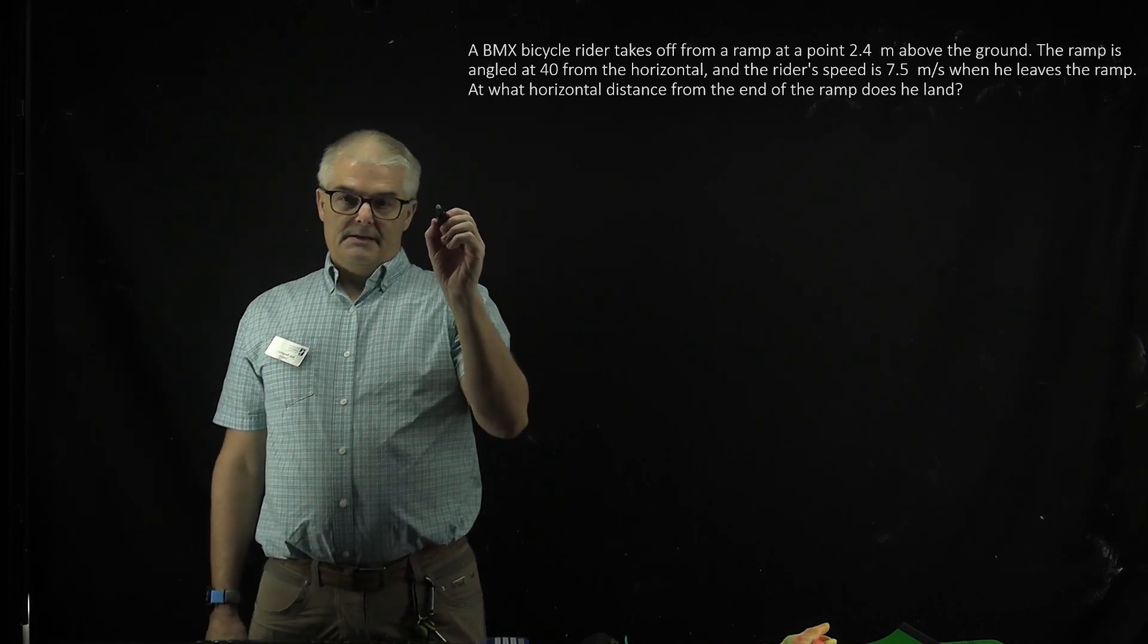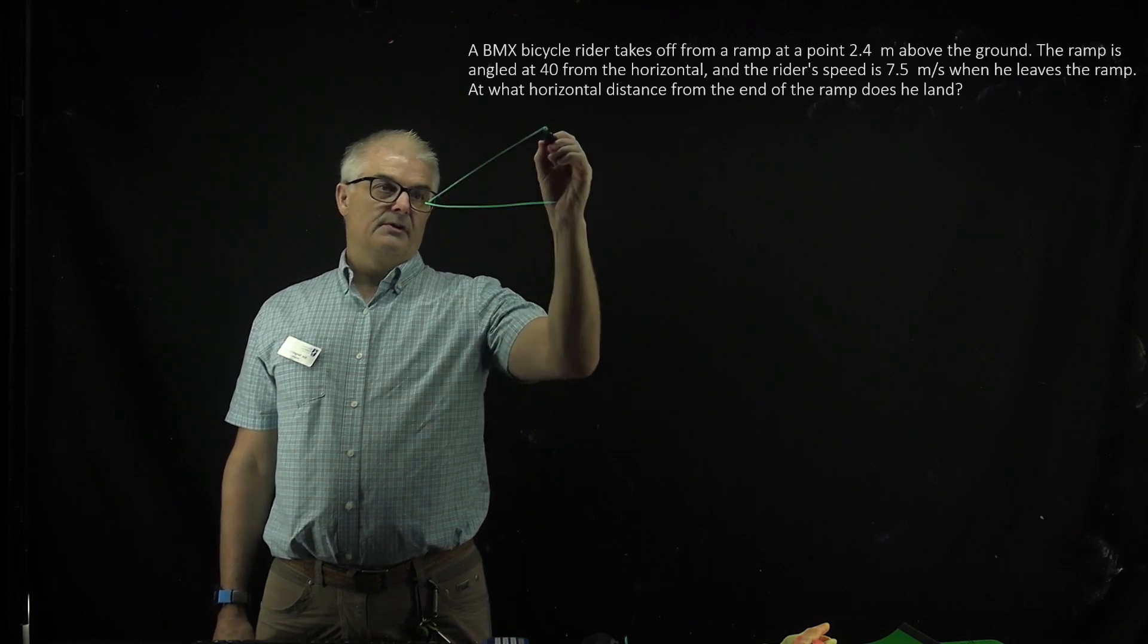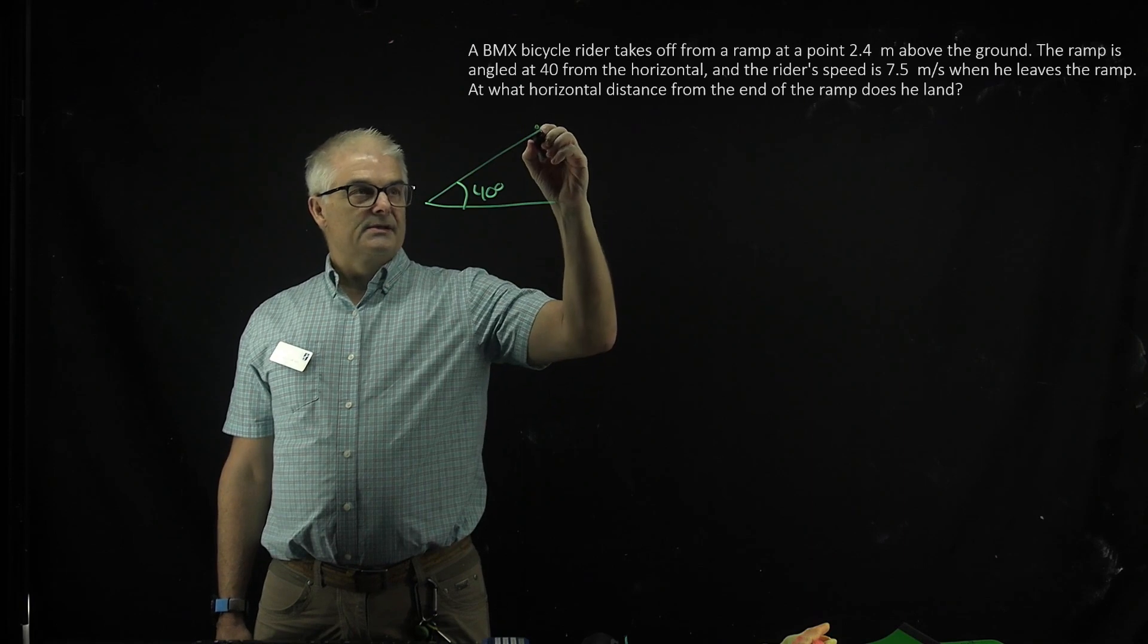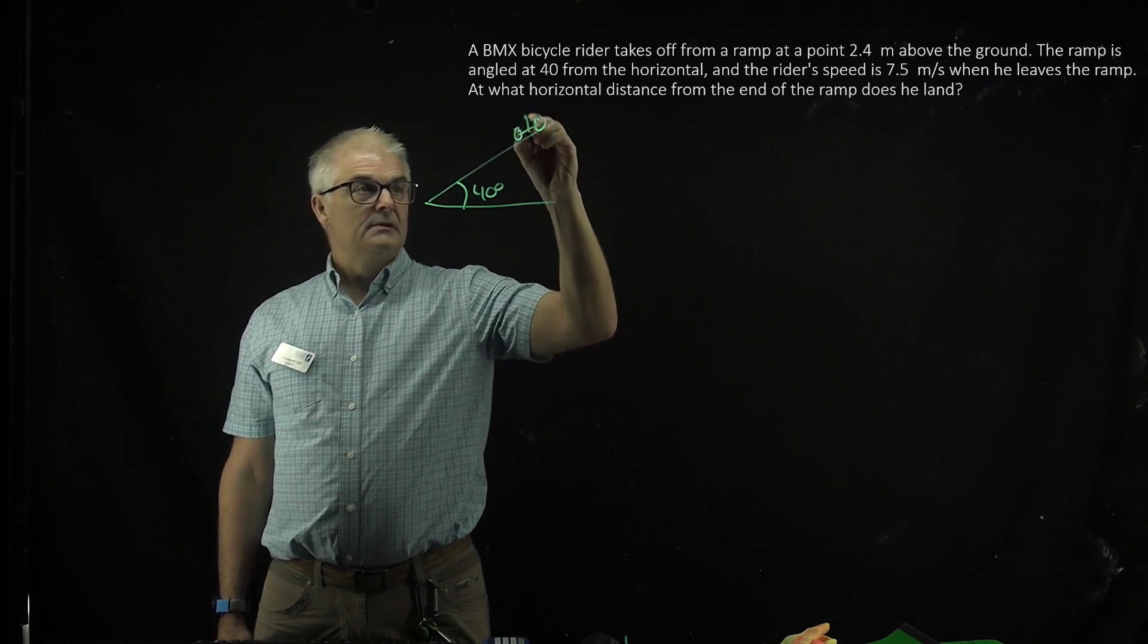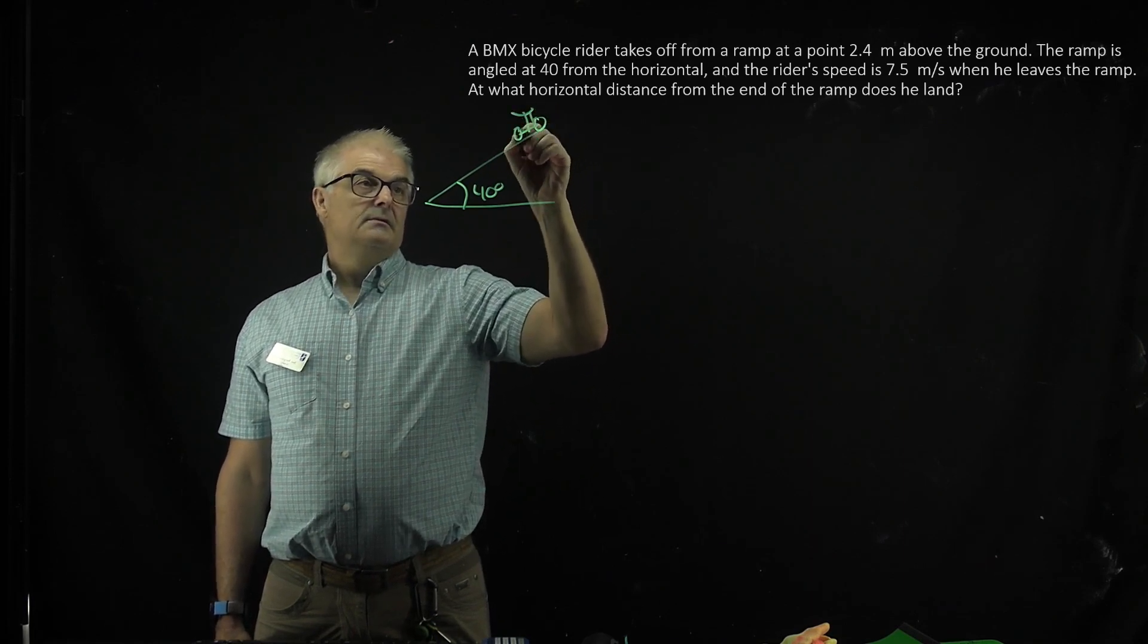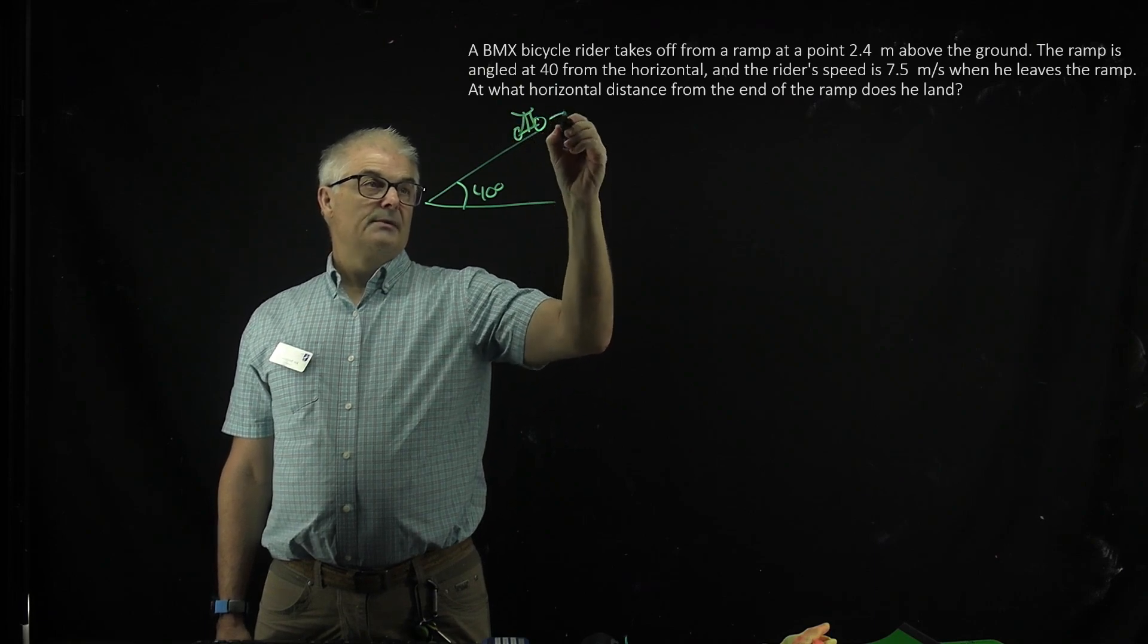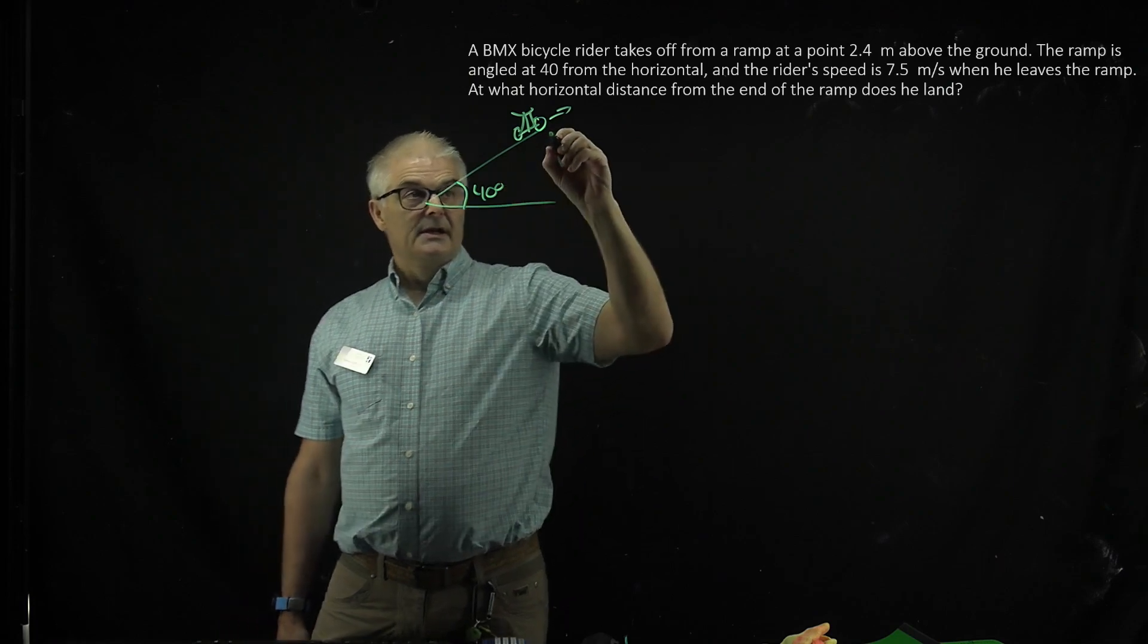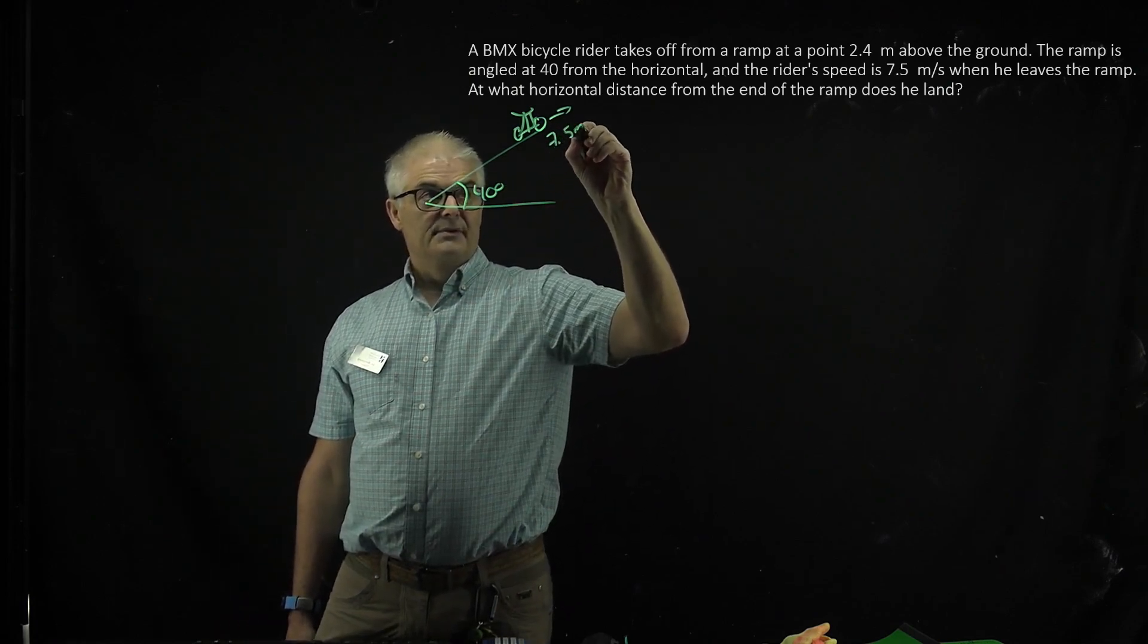We've got a BMX rider who's on a ramp, and the ramp is at 40 degrees, and he is coming off his bicycle. He's coming off at a speed of, in my case, 7.5 meters per second.